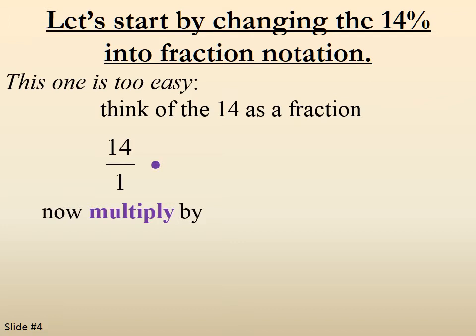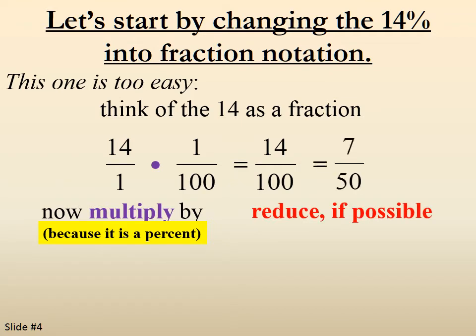Now we're going to apply the percent sign, so we're going to multiply by 1 over 100. That gives us 14 over 100, and then we reduce, and we get 7 over 50. So 14% as a fraction is 7 over 50.